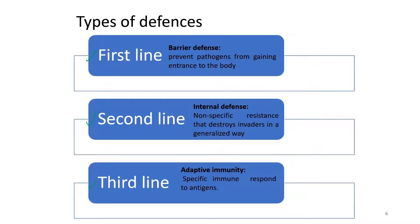The first line of defense is also called barrier defense, which prevents pathogens from gaining entrance to the body. The second line, also called internal defense, is a non-specific resistance that destroys invaders in a generalized way. The third line, also called adaptive immunity, is a type of specific immune response that responds to antigens.